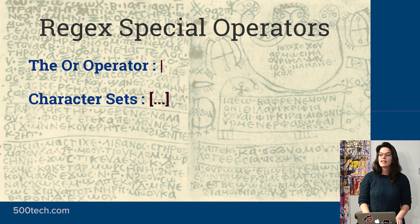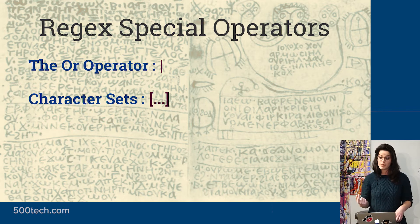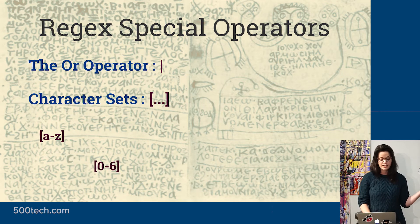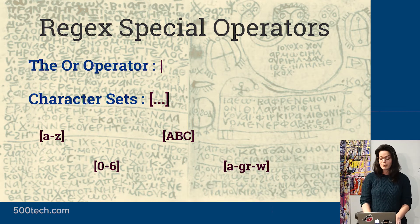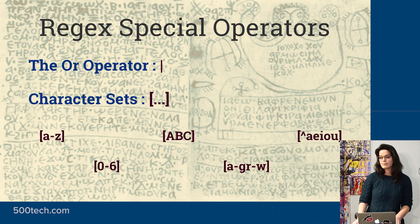There are character sets, which are brackets wrapped around a range of characters that will match for one spot in your search. So this would match any lowercase letter in that one position, or just zero through six, or just these three letters. You can add multiple ranges — A through G or R through W in that one spot. You can also throw a caret at the front of the pattern to negate what's in the character set, so it won't match any vowel at that spot.